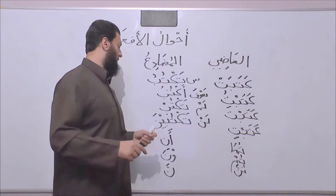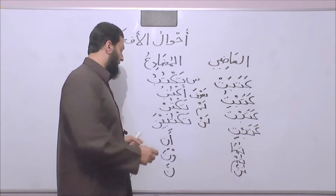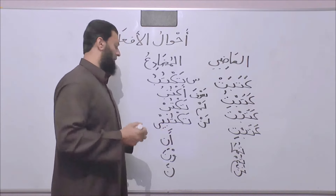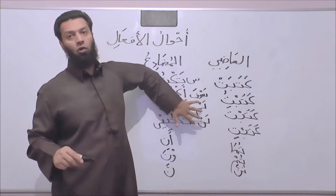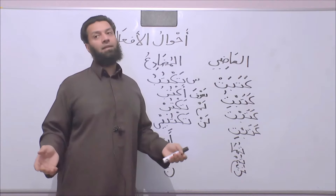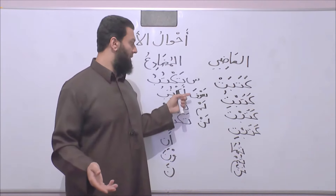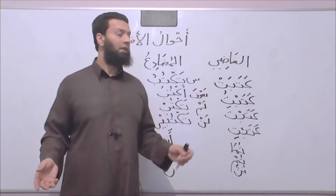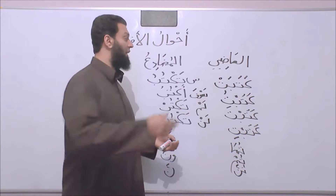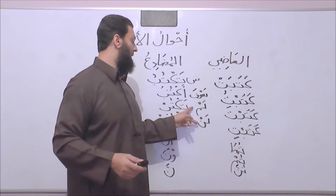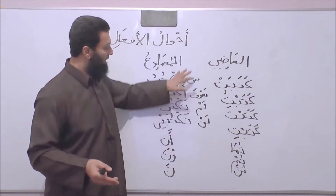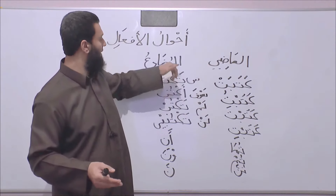If lan precedes taktubina, to render it mansoob we drop the noon, and it becomes lan taktubi. So we have four very common huroof that enter upon al-mudari', indicating that the word is al-mudari': seen, sawfa, lam, and lan. These cannot enter upon al-madi — seen and sawfa, being huruf al-istiqbal representing the future, clearly cannot enter upon al-madi. Similarly, lam and lan cannot. To negate al-madi we use ma. These four identifiers confirm that the word is al-mudari', the second type of fi'l.